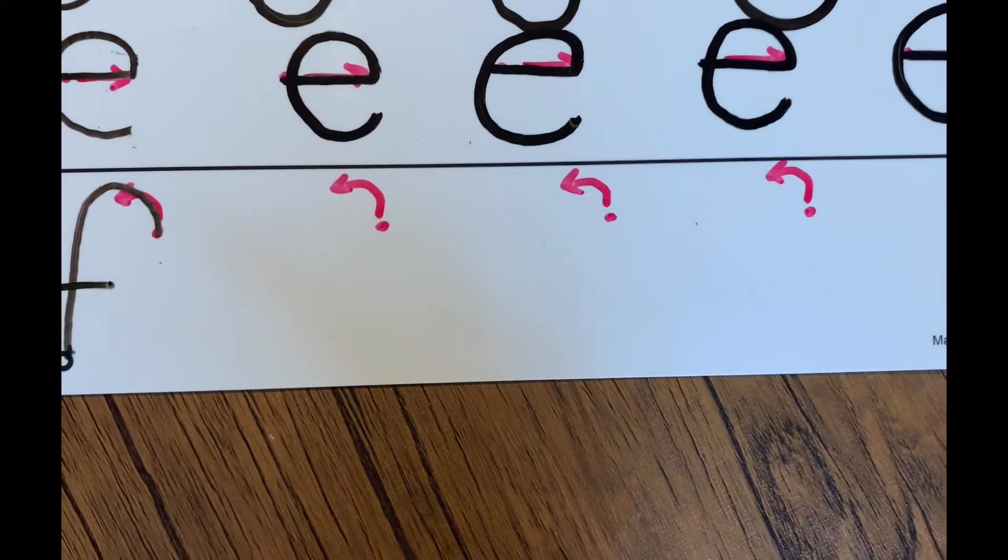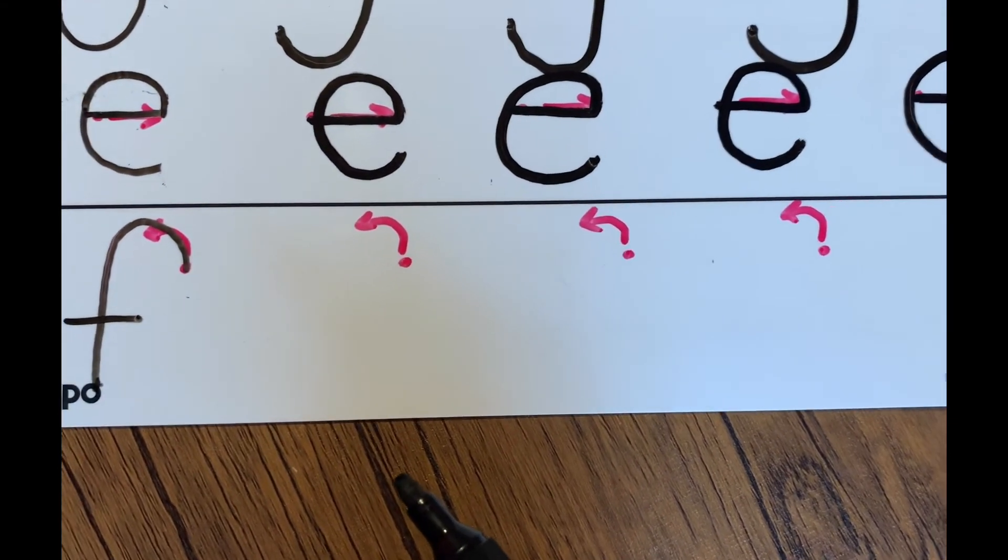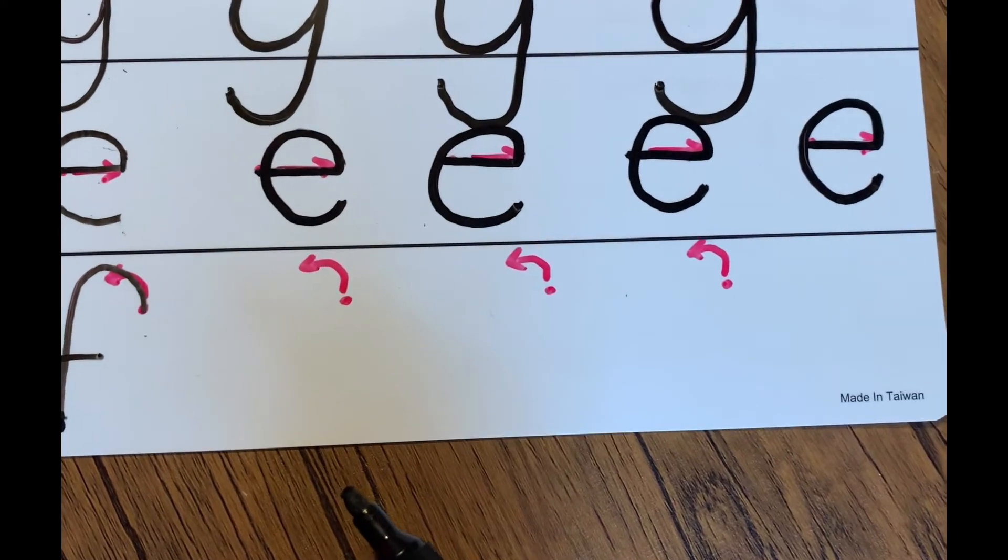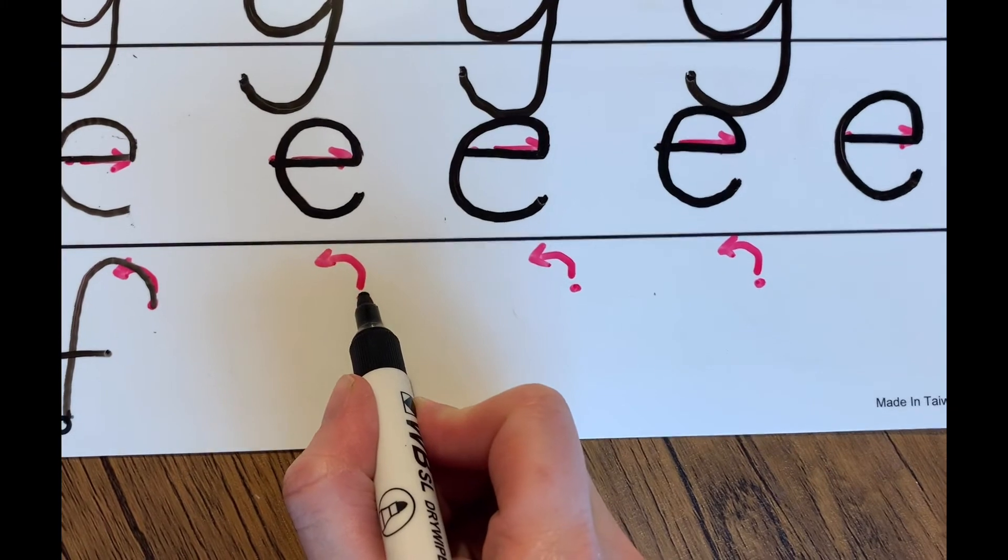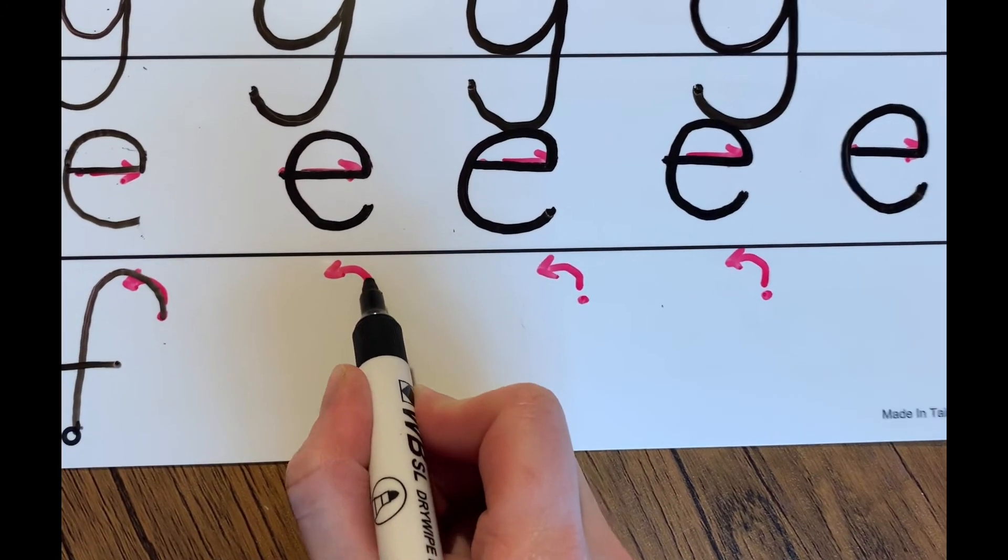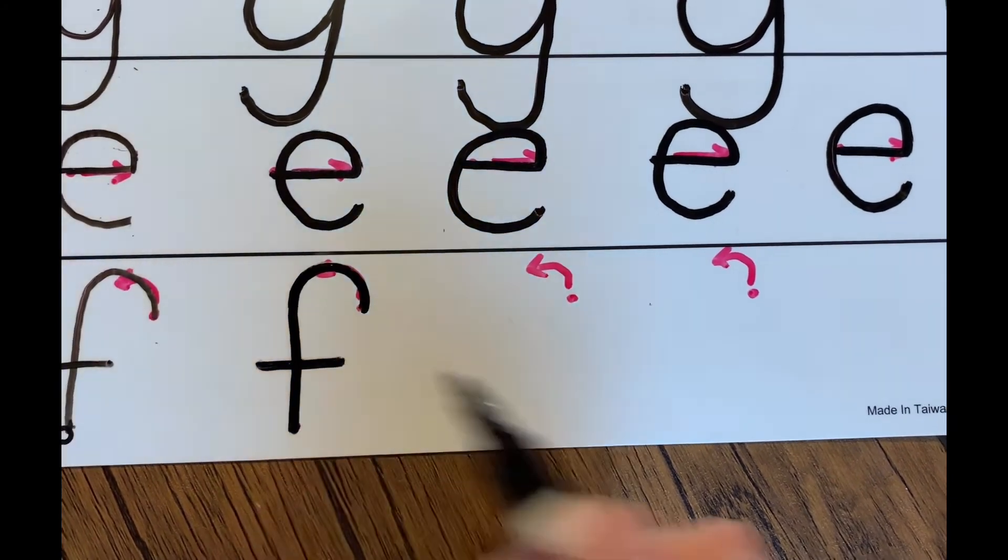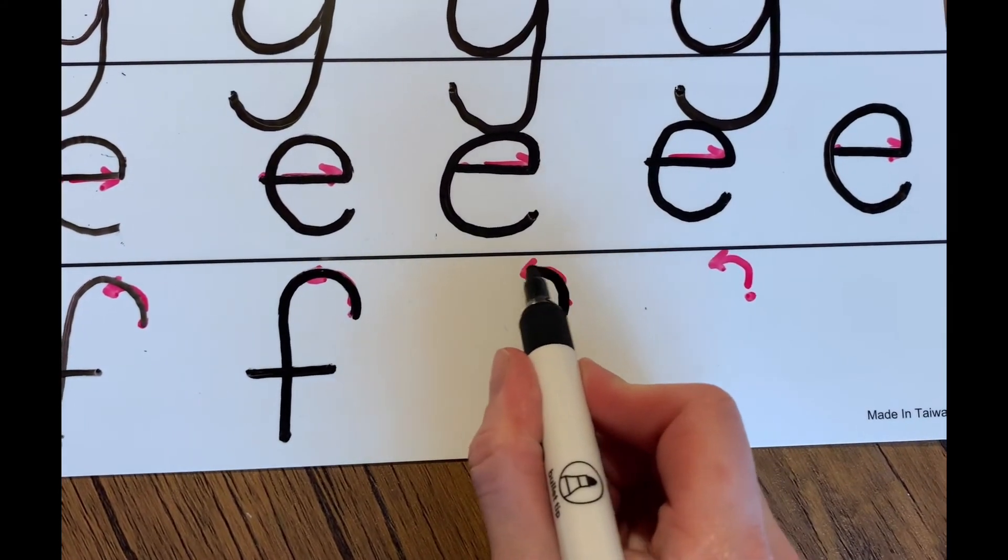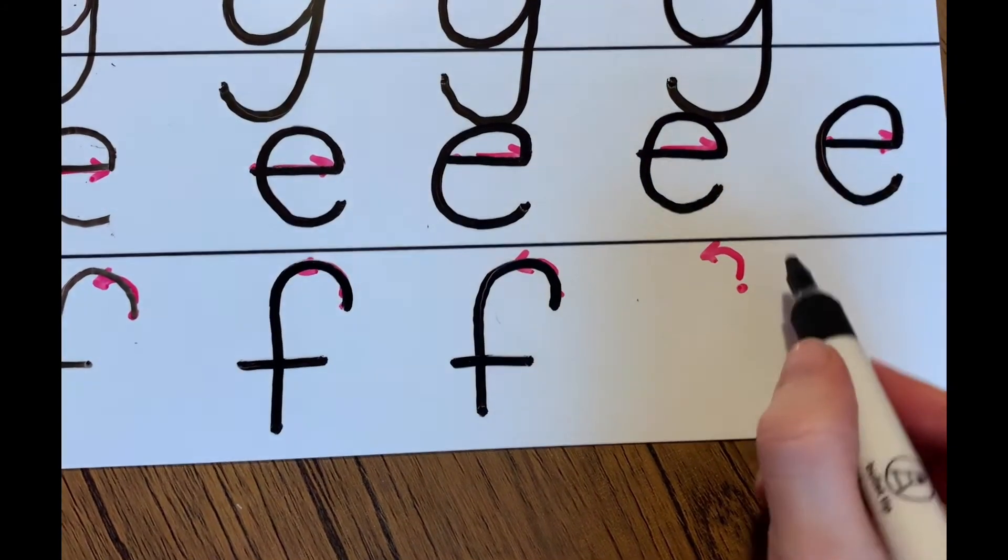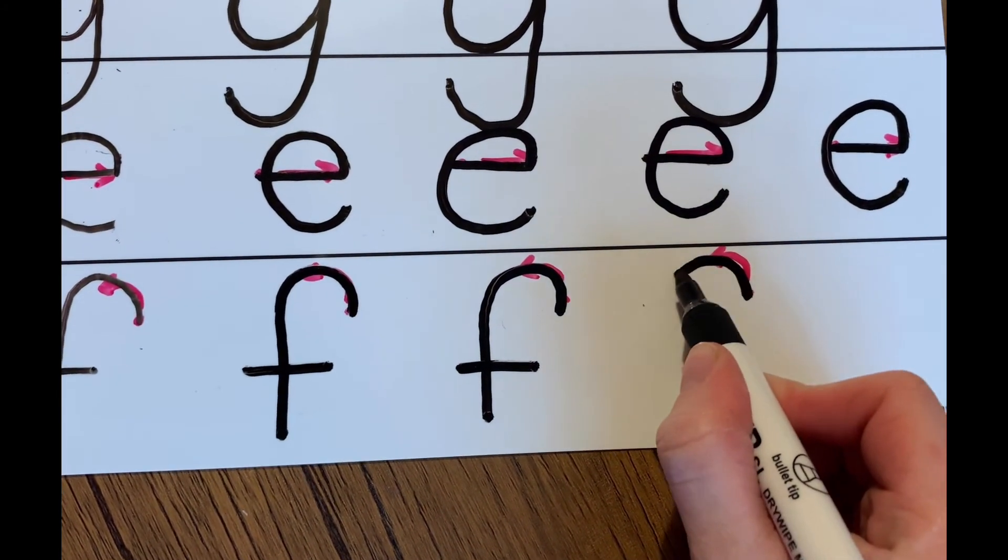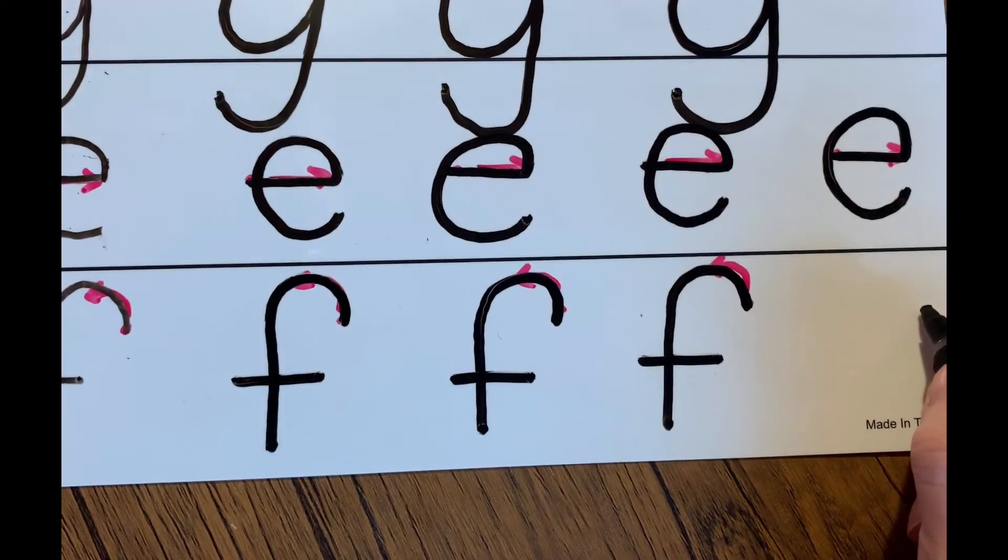And then finally we have our f. Now our f doesn't have a curly bottom. Lots of schools might do it with a curly bottom, but we at Ravensworth don't. So we start on the red dot. We go down the stem and across the leaves. And again, down the stem and across the leaves.